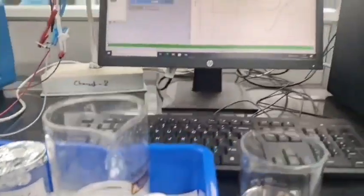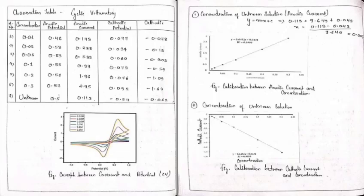Now let us move to the observation table part. In the observation table we can see that there are different types of concentrations. Here we have noted the anodic potential, the anodic current, the cathodic potential, and the cathodic current. A graph is obtained between the current and the potential.